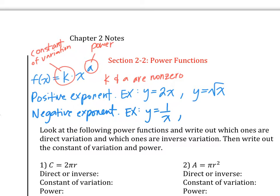Or we have something like y equals 1 over square root of x. What is the exponent? Negative one half. Again, that's a negative number, which means you're going to have inverse variation.